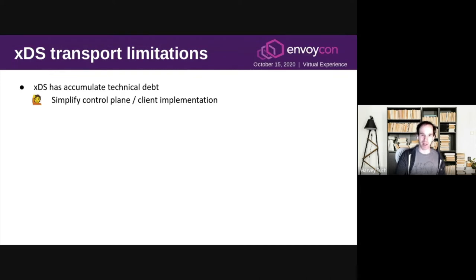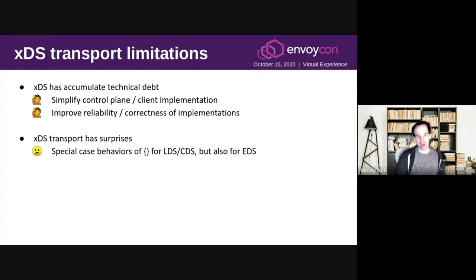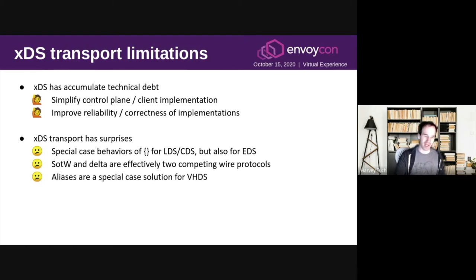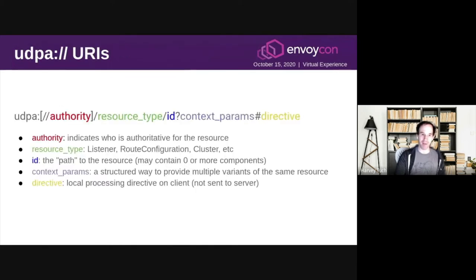We want to simplify control planes, make things easier to implement, and make it more robust and reliable. There are various surprises: the weird treatment of collections for LDS and CDS, the fact that we effectively have multiple wire protocols for state-of-the-world and Delta, and the issue with something called aliases which we need to address especially for VHDS. Our proposal — I have links in the final slide — goes about systematically addressing all of these. I want to hand things over now to Mark, who's going to talk about one of the core concepts fundamental to this: the idea of a structured resource name which takes the form of a URL and has this UDPA schema.